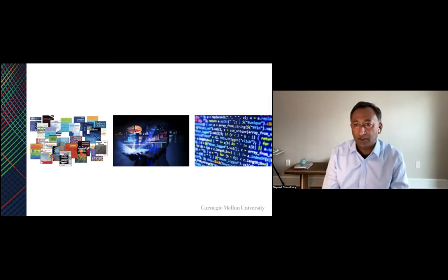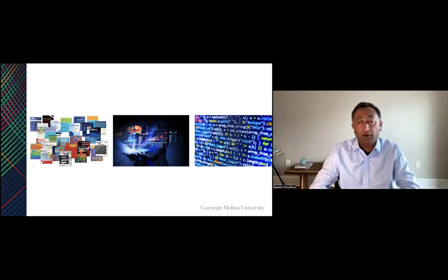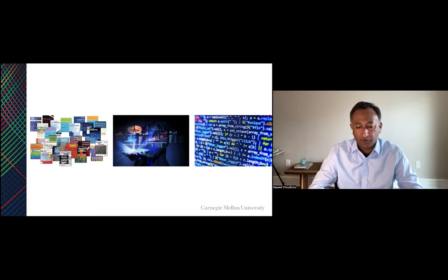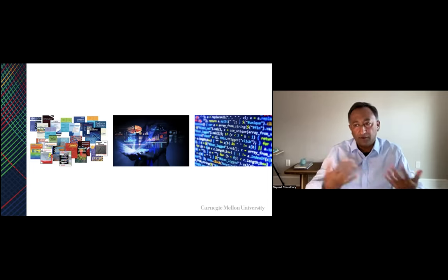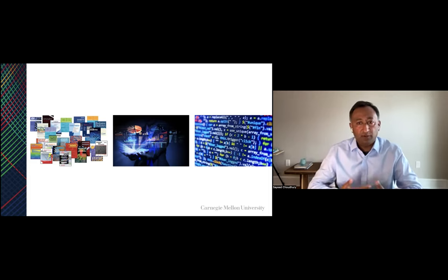A typical university produces three types of outputs: articles, data, and software or code. Over the last decade in the United States, there have been a couple of memoranda from the White House Office of Science and Technology Policy. The first is the so-called Holdren Memo in 2013, and then the Nelson Memo in 2022. These memos focus on so-called public access — the idea that outputs from federally funded research should be made available publicly, since U.S. tax dollars fund that research.